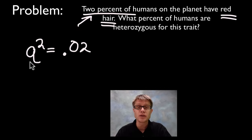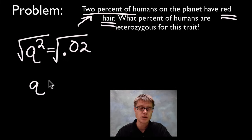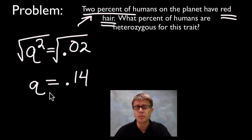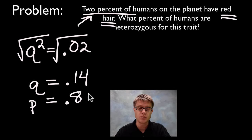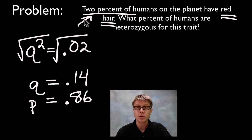Why Q²? Because these individuals are homozygous recessive. To solve, take the square root of both sides: Q equals the square root of 0.02, which is roughly 0.14. Once I know Q, and knowing that P plus Q always equals 1, I automatically know P equals 0.86. When solving Hardy-Weinberg equations, the first thing you want to do is find your P and Q values.